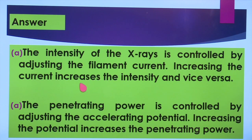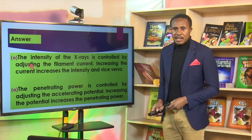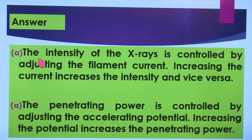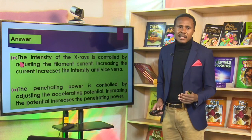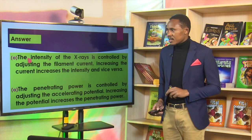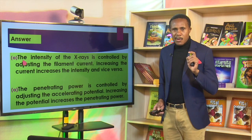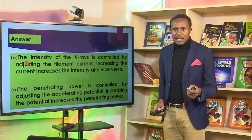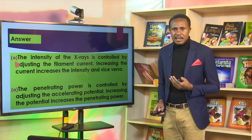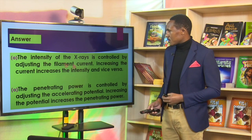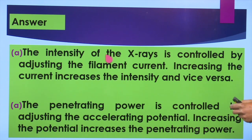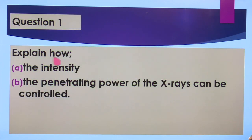When the filament current is increased, the intensity increases, and when it is reduced, the intensity reduces. We control the intensity of X-rays by adjusting the filament current because when it is adjusted, it adjusts the number of emitted electrons. When the current increases, more electrons are emitted, so the intensity of the X-rays on the other side increases.